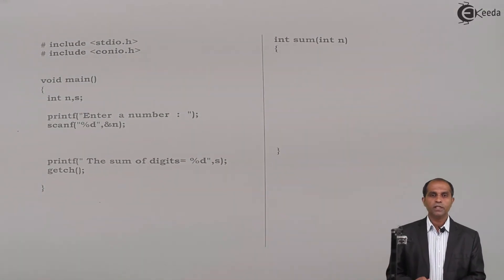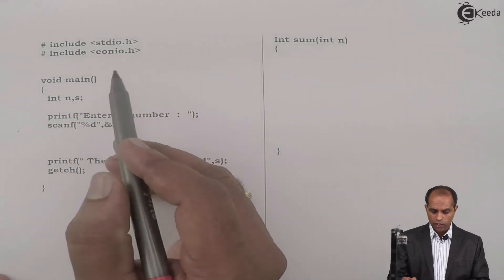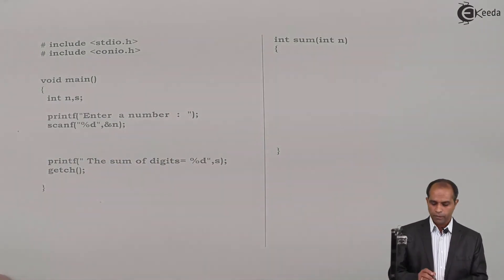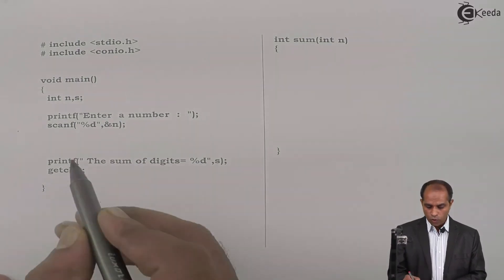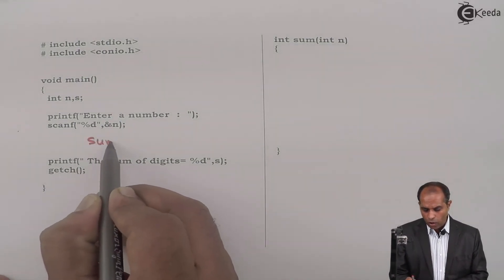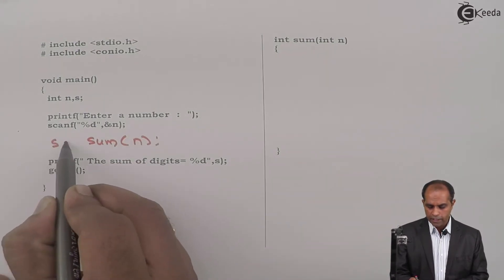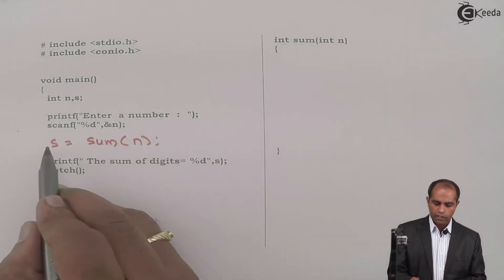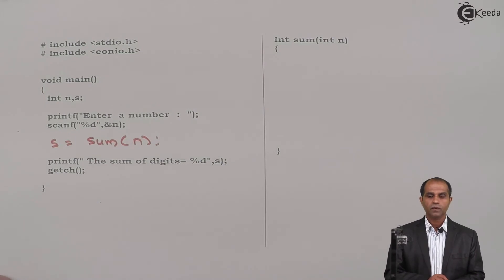See here? So I have this particular code partially written for you. stdio.h and conio.h, void main, int n and s, where n is the number, s is the one which is going to store the sum. I'll ask the user to enter a number, read that number as n. So once you read the number, call the sum function by passing the value of n. And here you'll say s equals to. So n goes to the other place. This function returns the value that is going to go store into s. And you'll say sum of digits equals percentage d comma s.